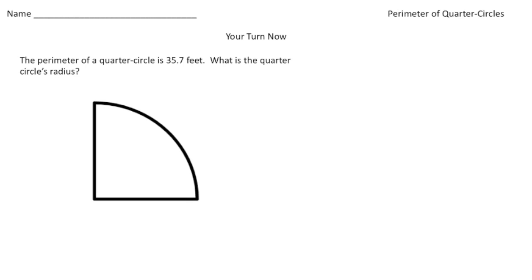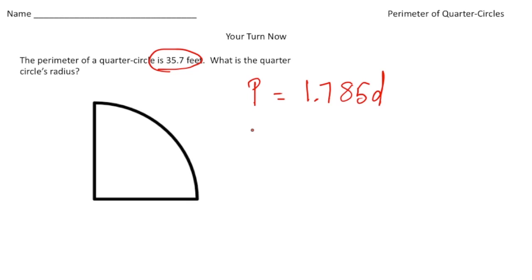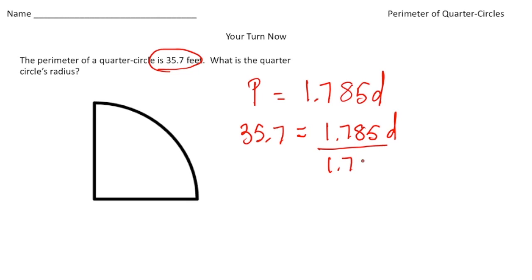Welcome back — let's see how you did on the practice problem. It says the perimeter of a quarter circle is 35.7 feet. What is the quarter circle's radius? We use the formula P equals 1.785 times the diameter. They gave us the perimeter, so I replace P with 35.7. To solve for D, divide both sides by 1.785, giving a diameter of 20.